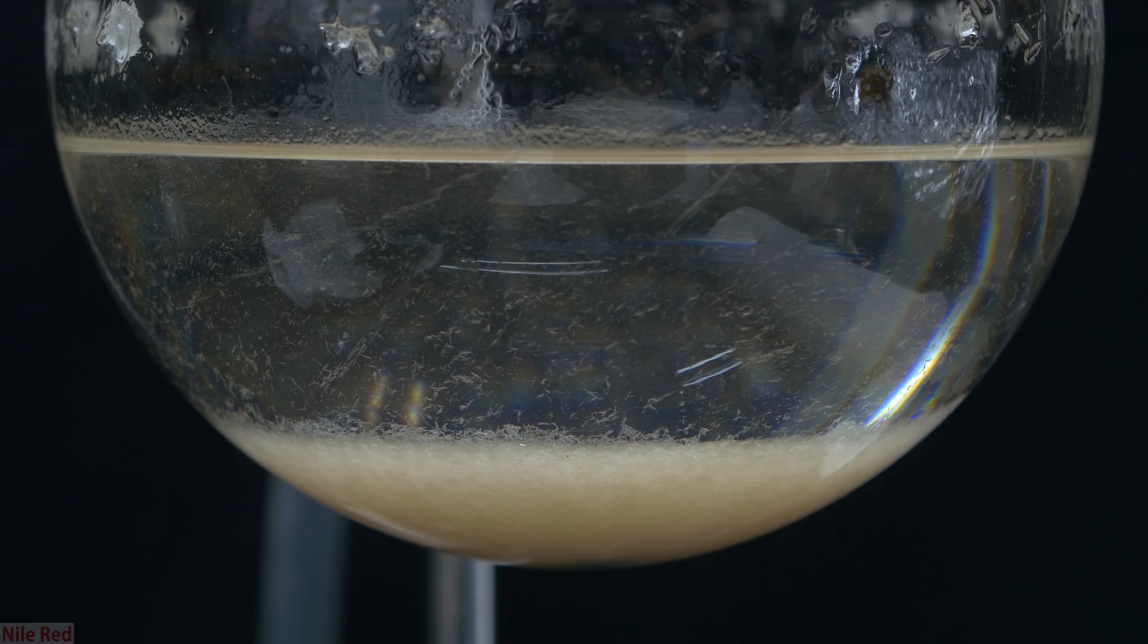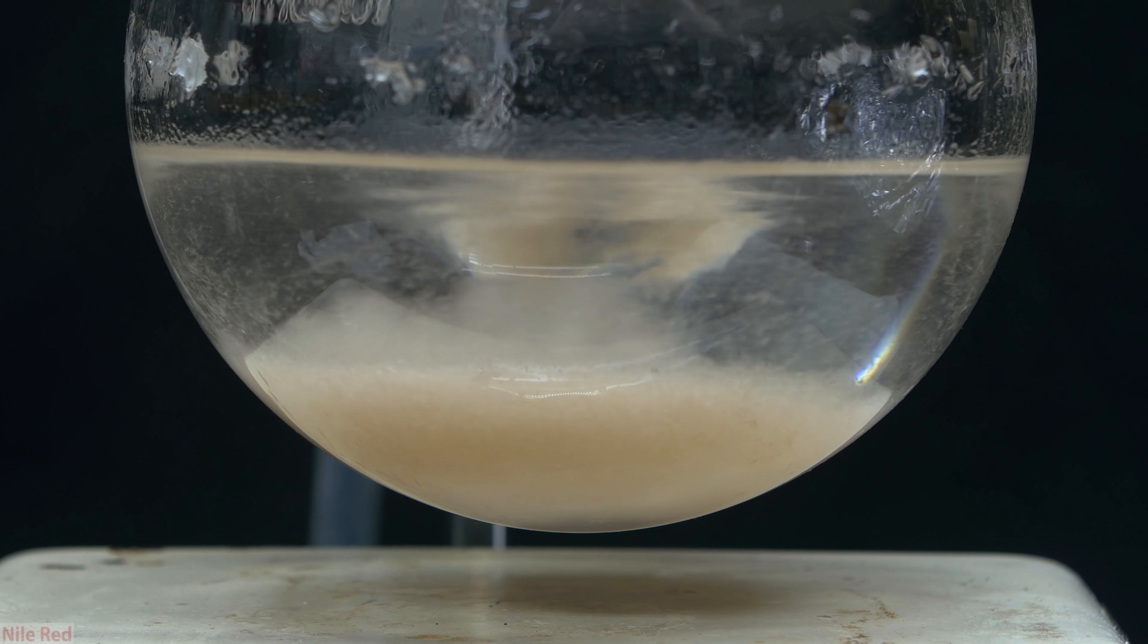Near the end, the oxalic acid started to turn brown, and I think this is because most of the water is gone, and the temperature started to rise above 100°C, and some of the oxalic acid started to melt.